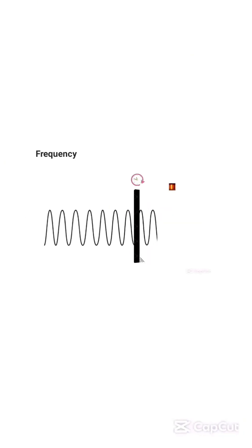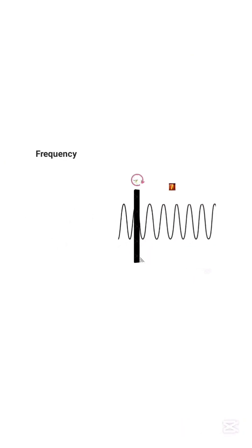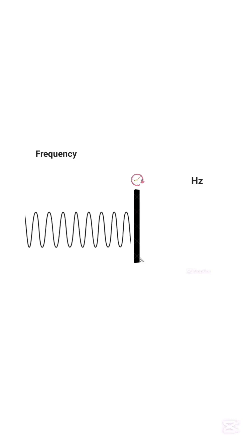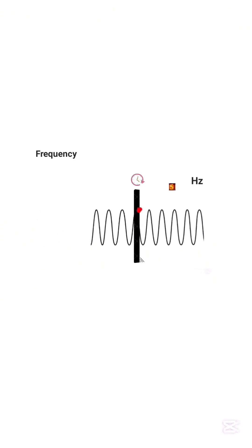Frequency is the number of wave cycles that pass a given point in one second, and it is measured in hertz. The frequency of this wave is 8 hertz because it completes 8 oscillations or wave cycles in one second.